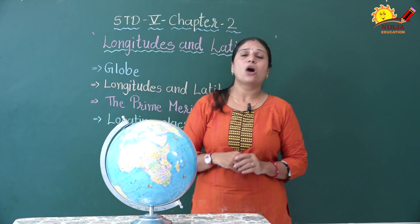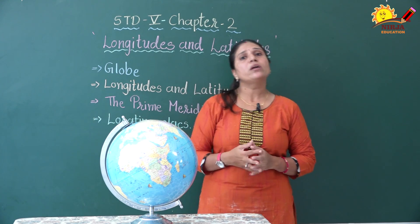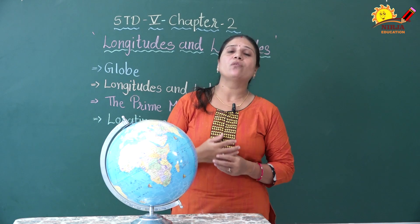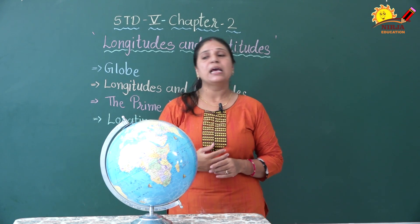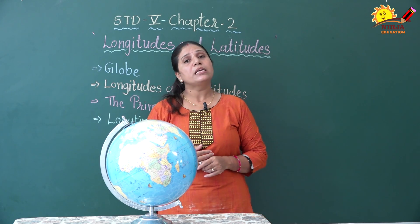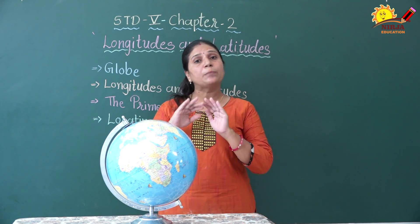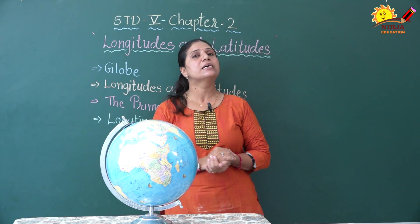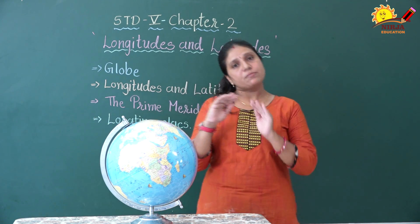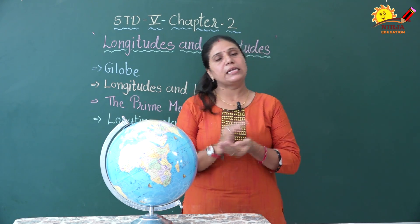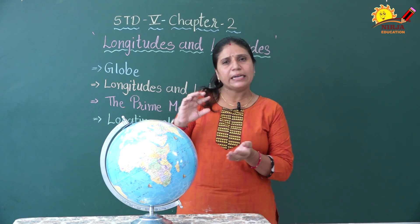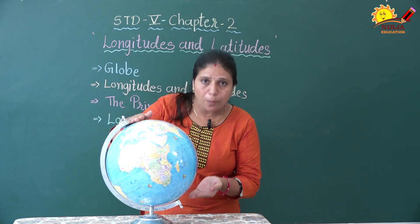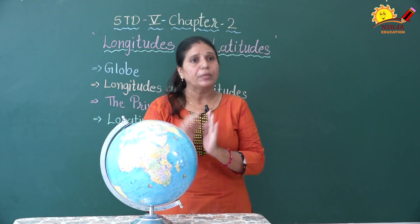Modern science and techniques also prove that our earth is not completely round in shape — it is spherical in shape and is slightly depressed from the top and bottom.